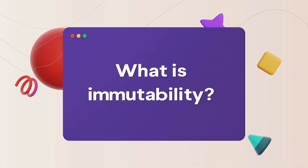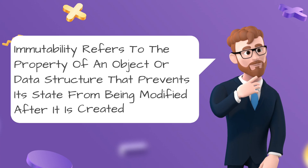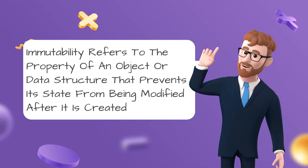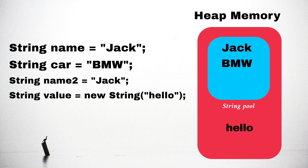Now let's discuss immutability. Immutability refers to the property of an object that prevents its state from being modified. Imagine you are cruising through your code and you realize that the variable car is no longer BMW — it's Honda now. In this case, the JVM heap memory will not update the value of BMW inside the heap memory. Instead, it will add the value Honda — hey Honda, come join the pool party.